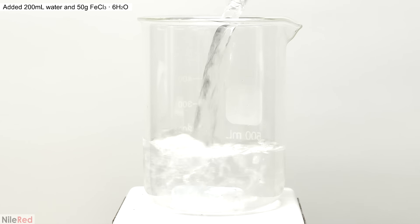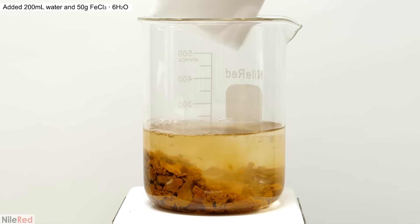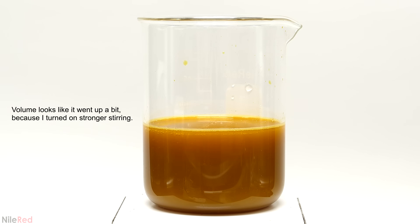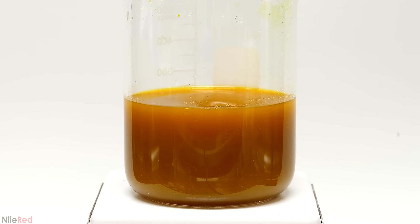For the moment, I put it on the side and I moved on to making the next solution. I poured in two hundred mils of water and added fifty grams of the iron chloride. Then I turned on the stirring and waited for it all to dissolve. About twenty minutes later, there was still a bunch of solid stuff floating around, but it wasn't really worth filtering it.